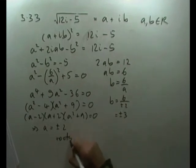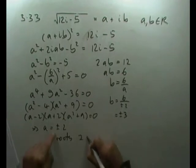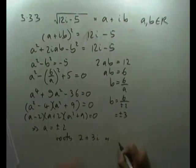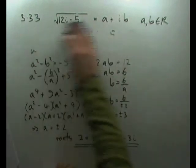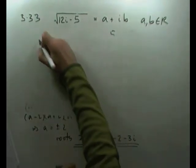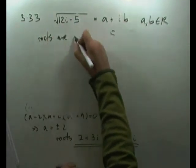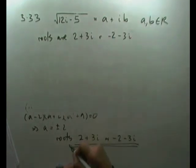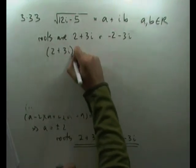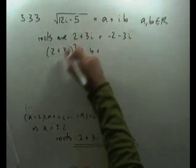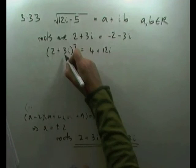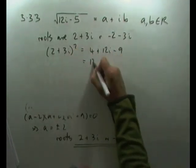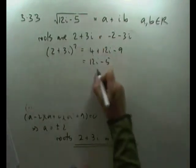So my roots are 2 + 3i or -2 - 3i. You can check just by squaring them back up. (2 + 3i)² = 4 + 12i + 9i² = 4 + 12i - 9 = 12i - 5. Confirmed.